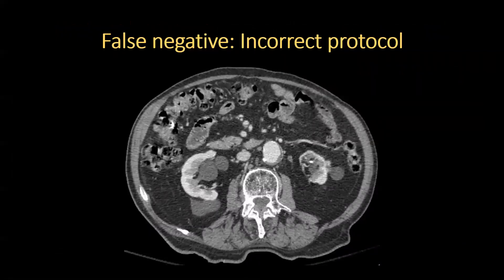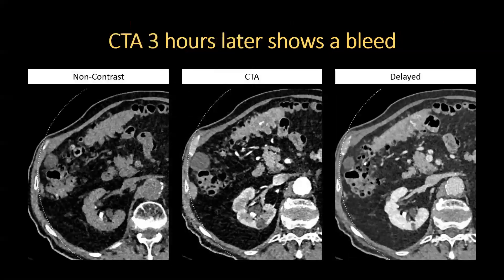A 98-year-old man presented to the emergency department with hematochezia and left lower quadrant pain. The study was protocoled as a routine CT of the abdomen and pelvis with IV contrast, and no acute abnormality was identified. Three hours later, the study was repeated as a dedicated GI bleed protocol CTA. The arterial phase shows a blush of luminal contrast material in the transverse colon that changes in size and morphology on the delayed phase, consistent with an active bleed. This highlights the importance of appropriate protocoling for diagnosis.